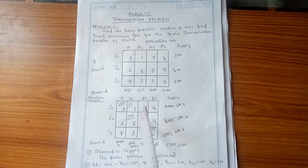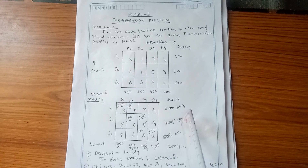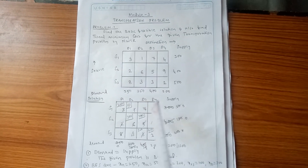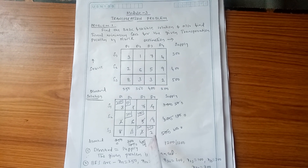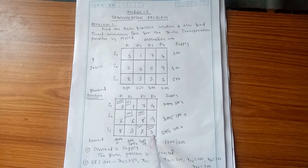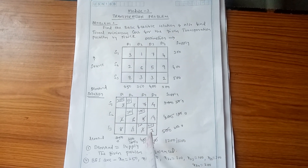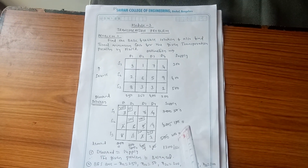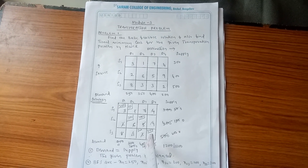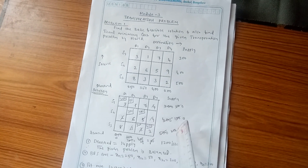Next box has cost 5. Supply remaining is 100 and demand for D3 is 400. Least value is 100. Allocate 100 and delete that row. Demand for D3 becomes 400 − 100 = 300. Remaining boxes are cost 3 and cost 2. For cost 3: supply is 500 (S3) and demand remaining for D3 is 300. Least is 300. Allocate 300. Supply becomes 500 − 300 = 200.